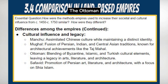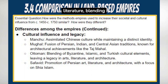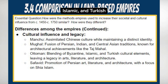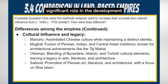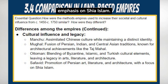The Ottoman Empire's cultural influence spread through its architectural wonders, arts, and literature, blending elements from Byzantine, Islamic, and Turkish traditions. The Safavid Empire played a significant role in the development and promotion of Persian art, literature, and architecture, with an emphasis on Shia Islam.